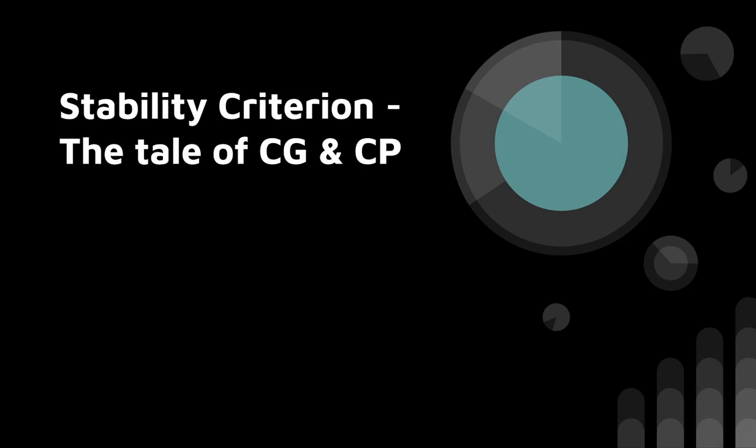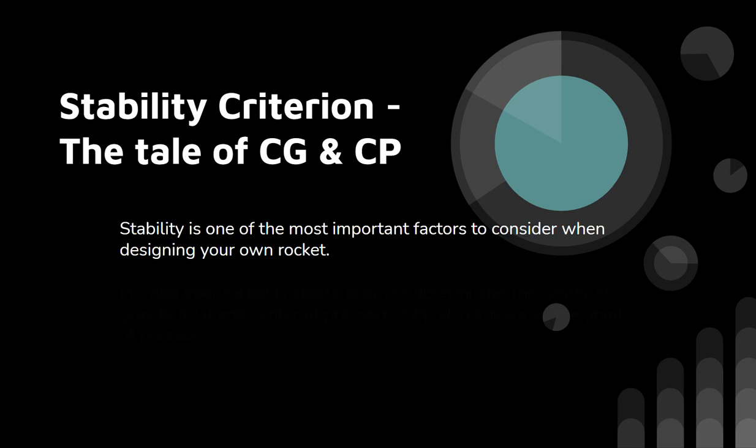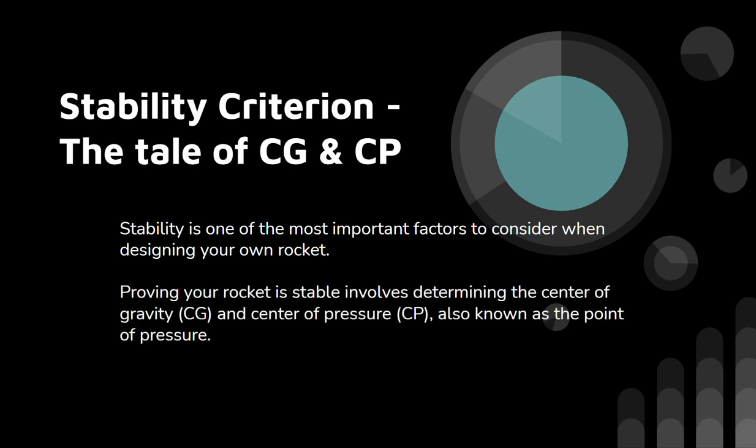The most important part while designing a model rocket is the stability criteria. Stability is determined with the help of two points on the model rocket: the CG and the CP. Why is stability important? For any component or machine to work, it needs to be stable first. If it's not stable, how can we expect it to perform its required functions? Stability criterion is therefore a very important factor when designing your model rocket.